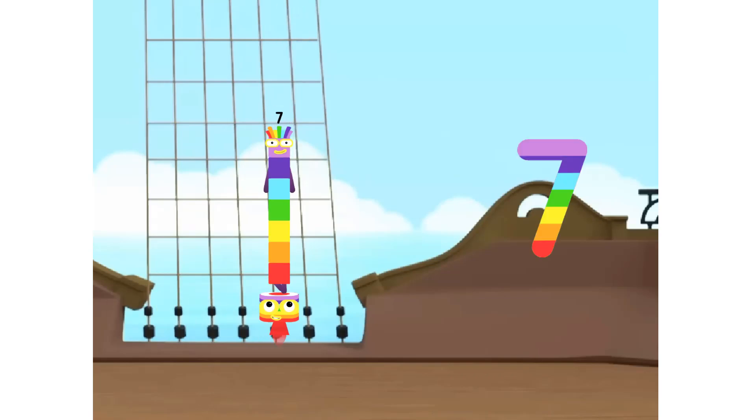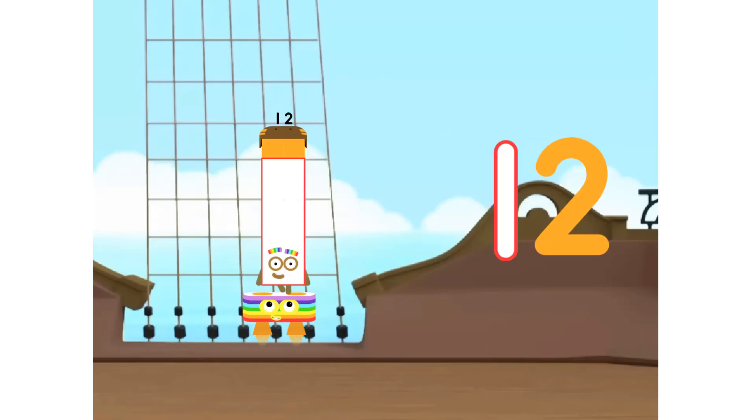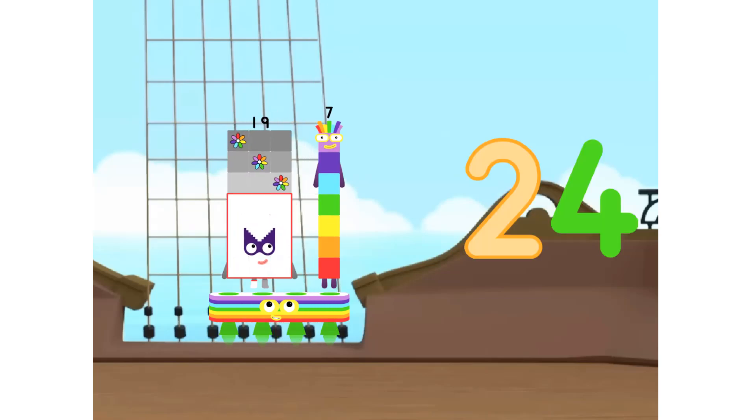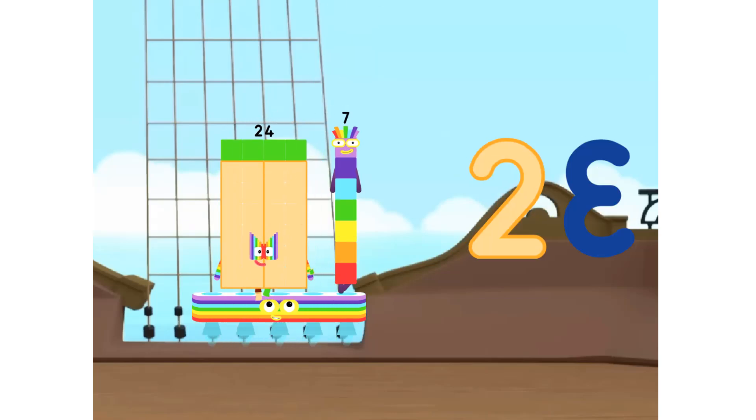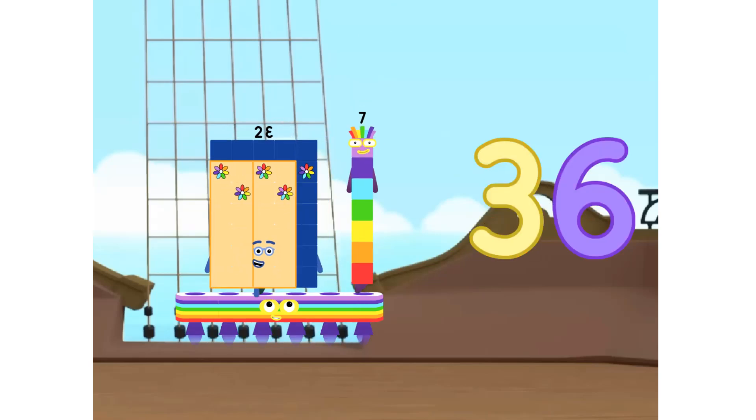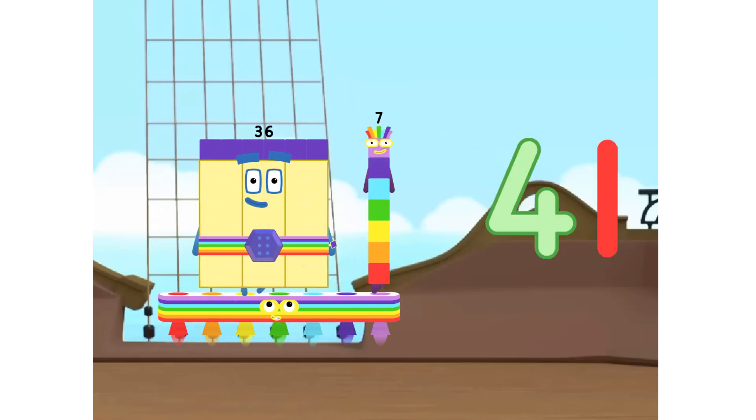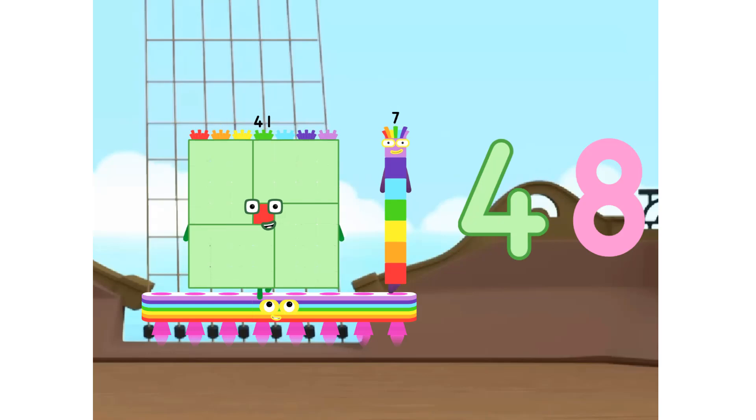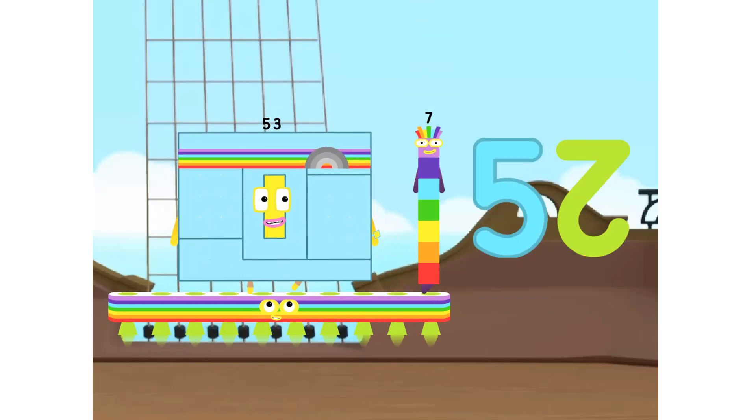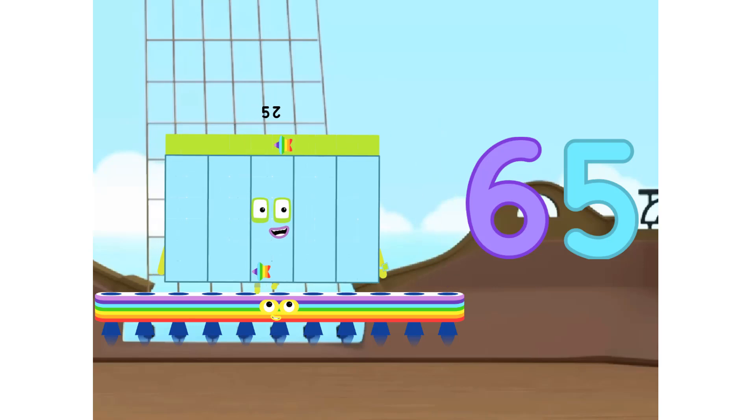1 seven is 7, 2 sevens are 14, 3 sevens are 21, 4 sevens are 28, 5 sevens are 35, 6 sevens are 42, 7 sevens are 49, 8 sevens are 56, 9 sevens are 63, 10 sevens are 70.